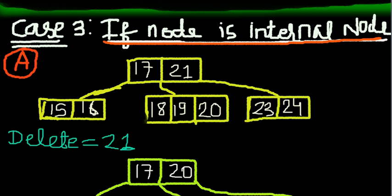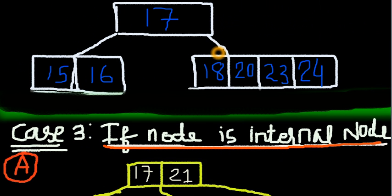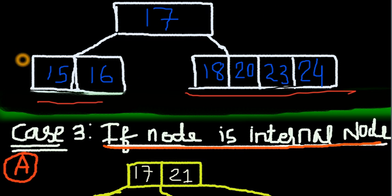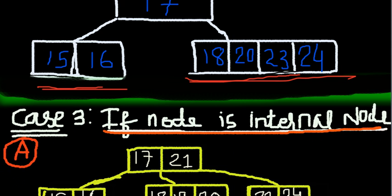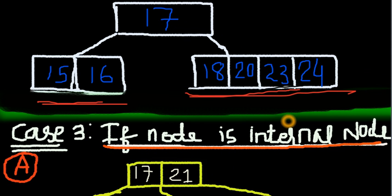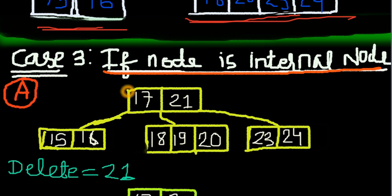This is the third case we will talk about in the delete function — the last case. If the node is an internal node: earlier we were talking about leaf nodes — the nodes at the end of the tree which do not have children. An internal node is one that is above, meaning it has children.